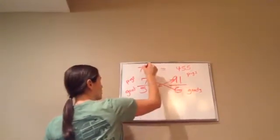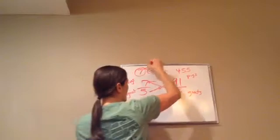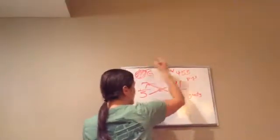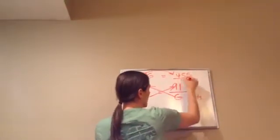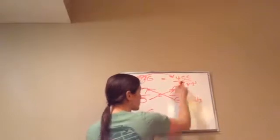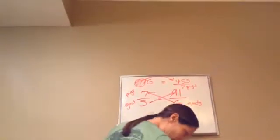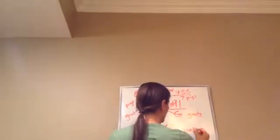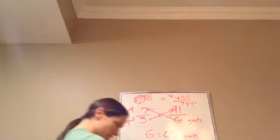Now, we want to get the G by itself. So times 7 comes across the equal sign. And since it's times 7, it's going to be divided by 7. So G equals 455 divided by 7, which is going to give us the answer of 65 goats. So that's how you would do that.